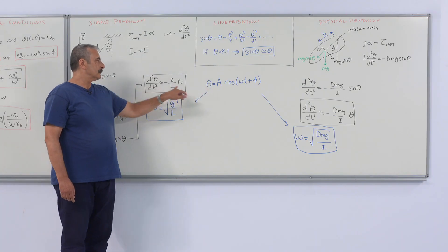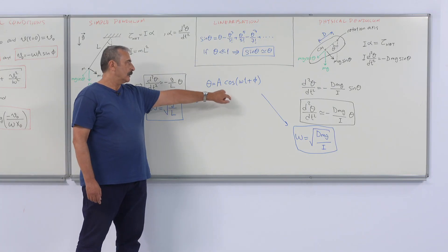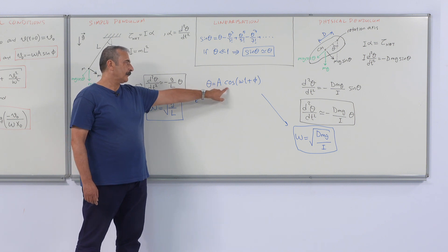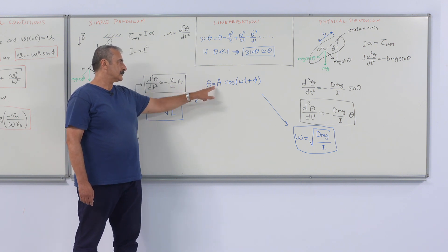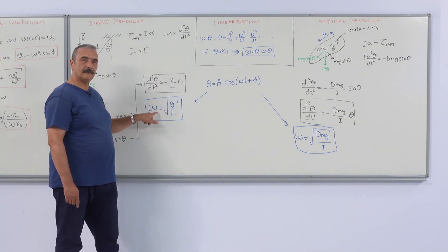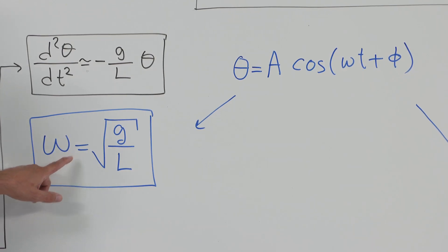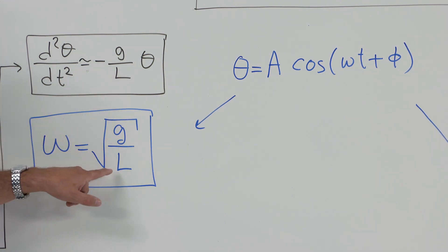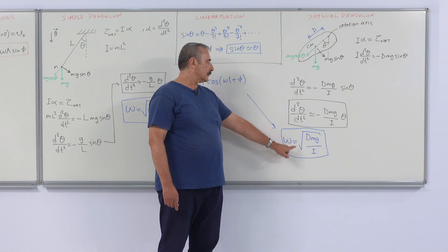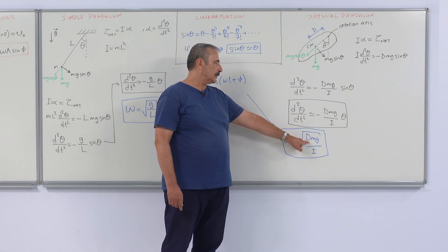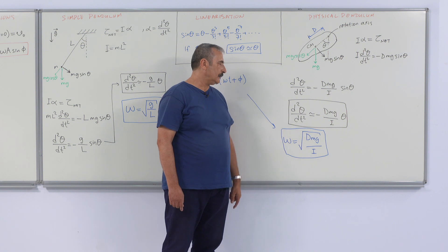These equations of motion have a solution of the standard oscillatory form. Taking the derivatives and inserting into the equation as before, we obtain the angular frequency: omega equals the square root of g over L for the simple pendulum. For the physical pendulum, the angular frequency is the square root of d times mg over the moment of inertia.